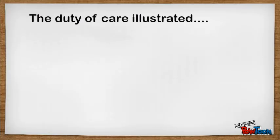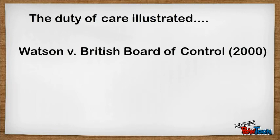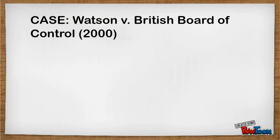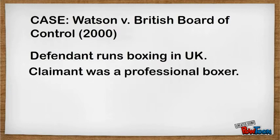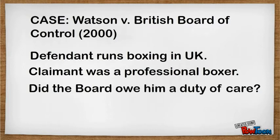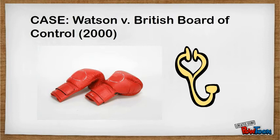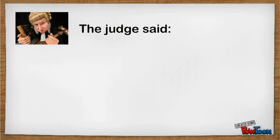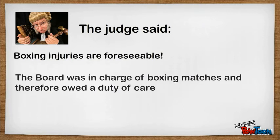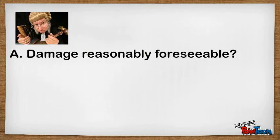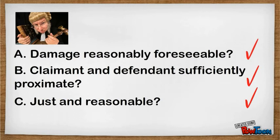One case that illustrates how the duty of care works is Watson v British Boxing Board of Control. The defendant, the British Boxing Board of Control, runs boxing, and all those involved in a boxing match are obliged to comply with the board's rules. The claimant, Michael Watson, suffered a brain haemorrhage during a title fight. He received medical treatment, but only after a delay, by which time he had sustained serious brain damage. He claimed damages in negligence from the board of control. Lord Phillips, ruling in favour of Mr Watson, said that the injuries sustained by professional boxers were clearly foreseeable — a consequence of being in a boxing match, an activity the board controlled. There was therefore a relationship of close proximity between the board and professional boxers. It was also fair, just and reasonable to impose a duty of care on the board.